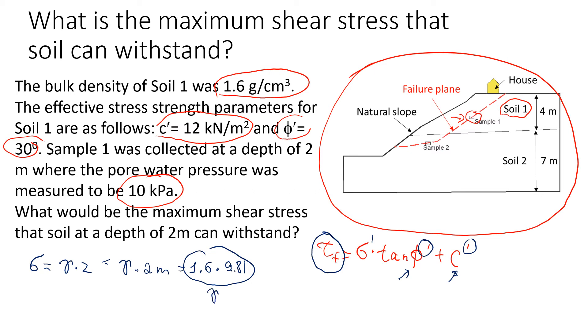If you still don't know how to calculate unit weight of soil and density, please watch one of my videos about densities and common mistakes. Now we're going to multiply it by 2 meters, and that will give us the normal stress, or what we also call total stress, which equals 31.4 kilonewtons per square meter.